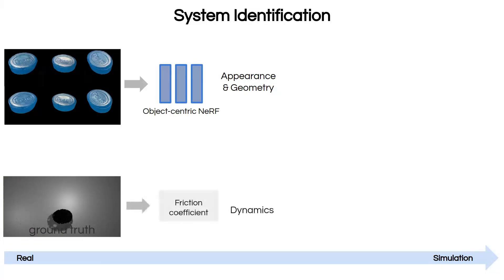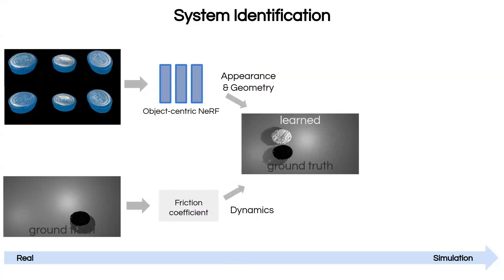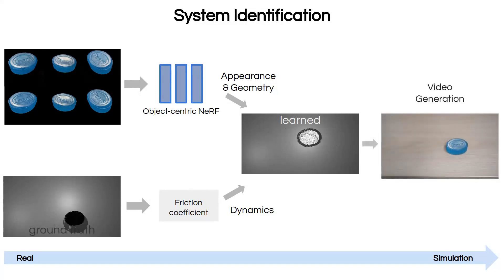Provided with the density field and the ground-truth trajectory, we estimate the coefficient of friction of the soap bar by minimizing a trajectory prediction loss. Finally, with this Dynamics Augmented Neural Object, we could generate new videos starting from a different initial condition.